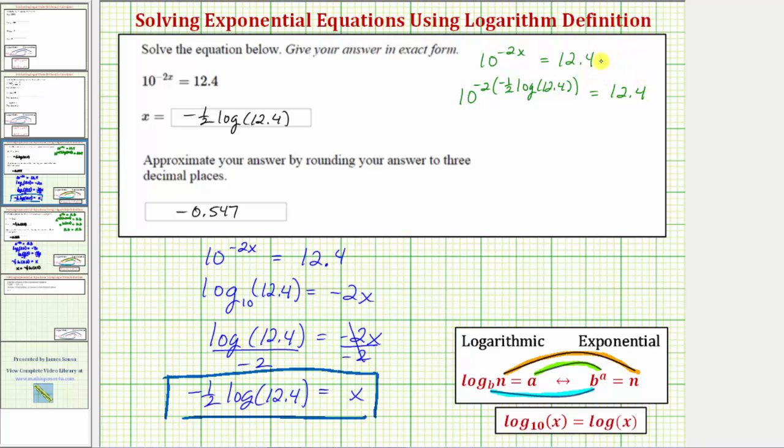Simplifying the exponent, notice how we have negative 2 times negative one half, which is positive 1. So we can write the left side as 10 raised to the power of common log 12.4 equals 12.4.